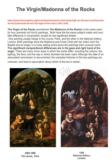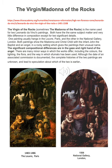One painting usually hangs in the Louvre in Paris and the other hangs in the National Gallery in London. Both paintings show the Madonna and Christ child with the infant John the Baptist and an angel, all sitting on the ground in a rocky setting, which gives the painting its unusual name. The significant differences between the two are in the gaze and in the right hand of the angel. There are also minor differences in the colours, lighting, some of the flowers, the flora, and the way in which the Sfumato has been used.